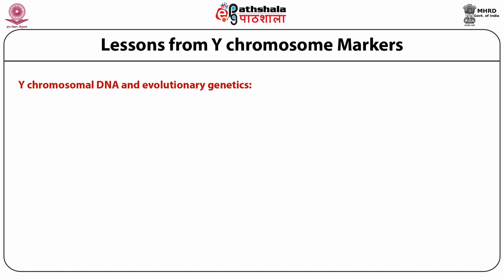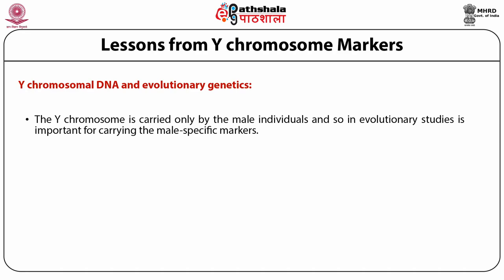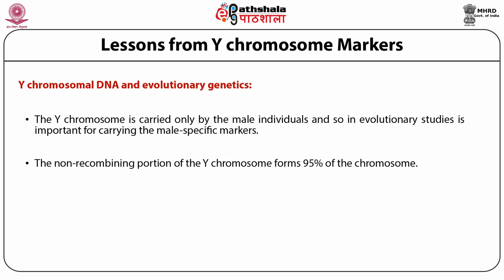Lessons from Y-chromosomal markers: The Y chromosome is carried only by male individuals and is important for carrying male-specific markers in evolutionary studies. The chromosome is gene-poor, having only 27 protein-coding genes, and includes short interspersed nuclear elements (SINEs), endogenous retroviruses and segmental duplications. The non-recombining portion of the Y chromosome forms 95% of the chromosome. These markers, located in the non-recombining portion (NRY markers), provide clues on the origin, divergence and movement of paternal lineages.